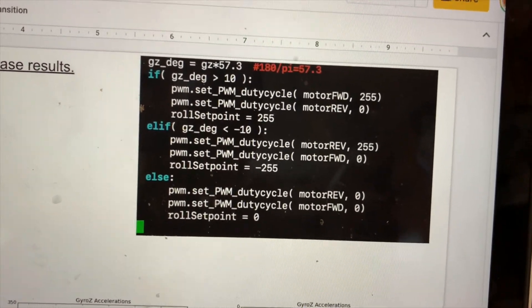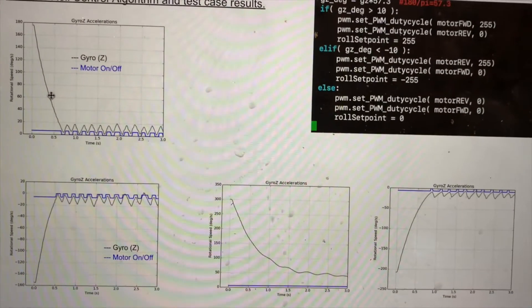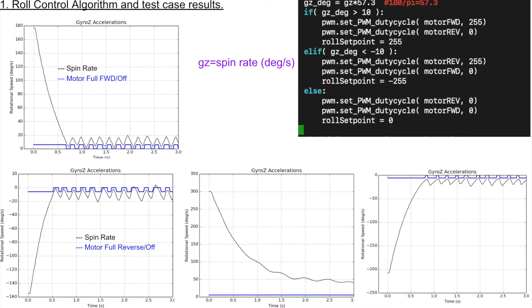I tested that out in my room and it actually worked really well. You can see I just started spinning the rocket and the motor, which is blue, would turn on or off and you can see it compensate for the roll pretty quickly. I couldn't compensate for more than about 200 degrees a second, but overall, pretty simple algorithm that ended up working really well.